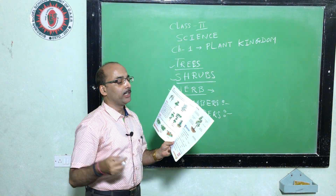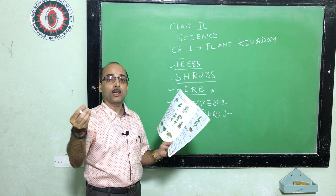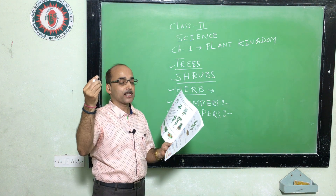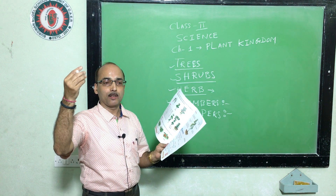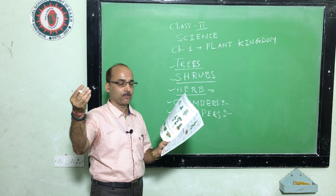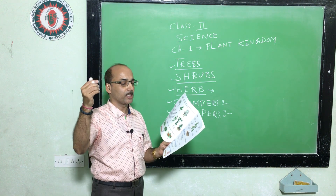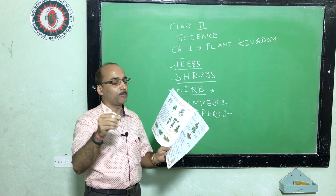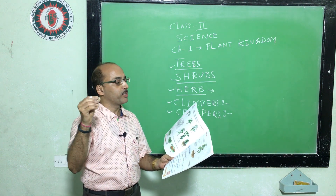The leaf makes food for the plant — it is called the kitchen of the plant. Leaves trap sunlight and green plants prepare food with the help of leaves. This process is called photosynthesis. Your chapter ends here — learn all these things.